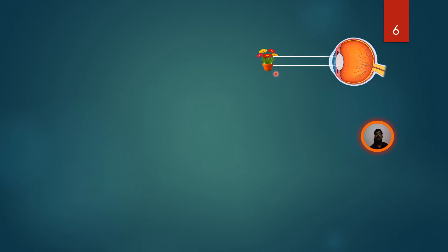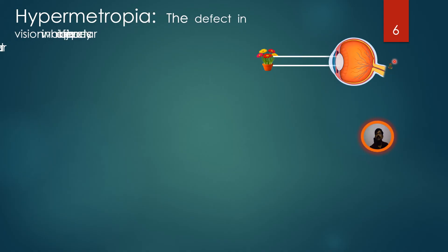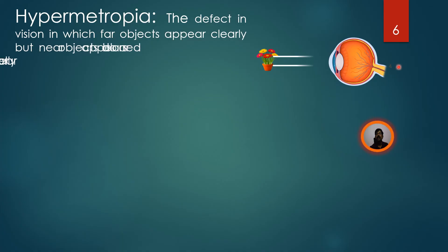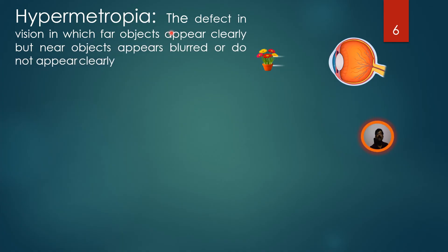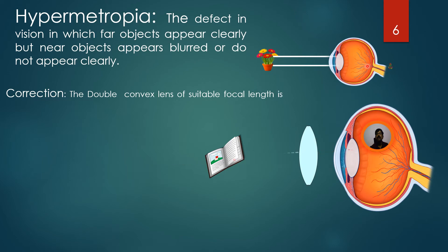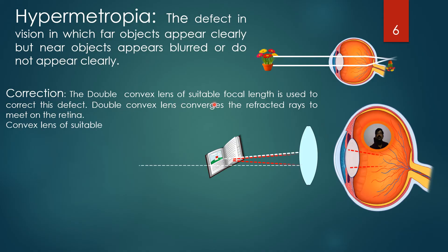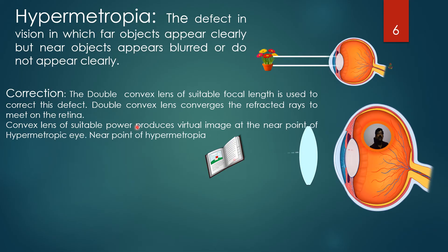The final image is formed behind the retina. The defect in vision in which a person can see far objects clearly but cannot see nearby objects is known as hypermetropia, or long sightedness. He can see far objects but cannot see nearer objects because the image of the object is formed behind the retina. To correct this defect, a double convex lens of suitable focal length is used. The double convex lens converges the refracted rays to meet on the retina.